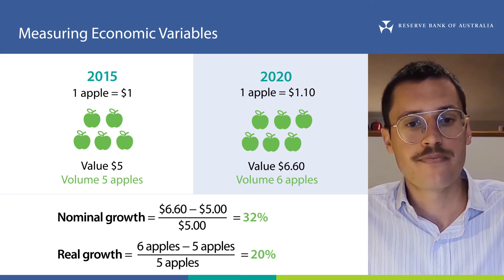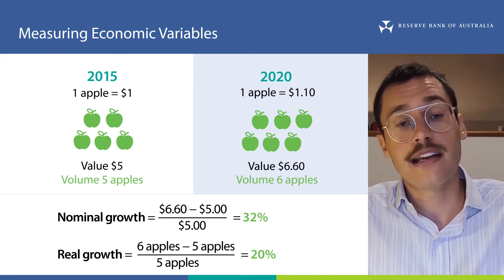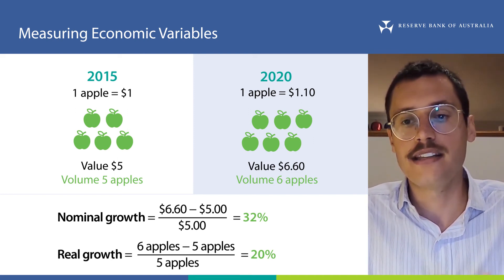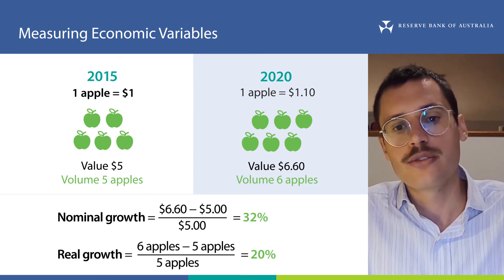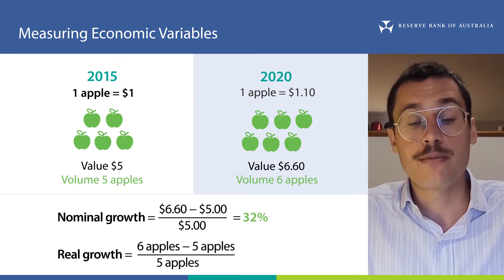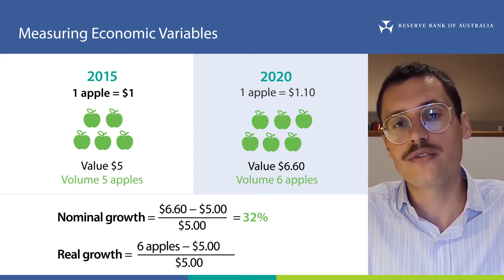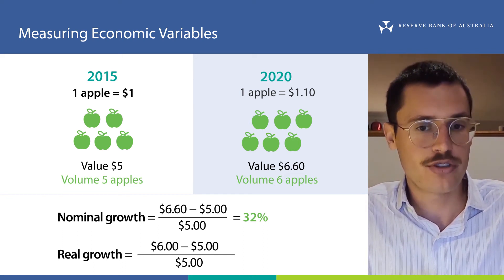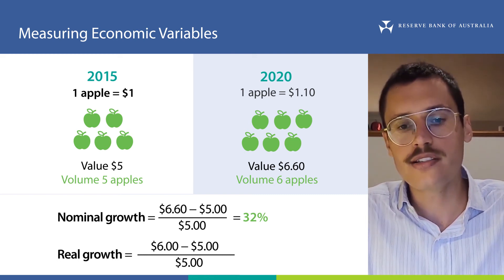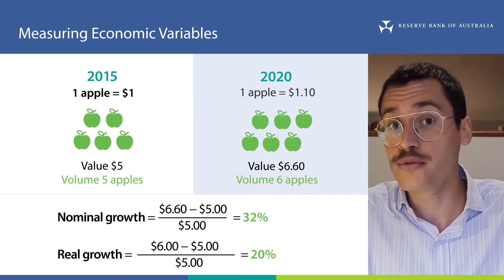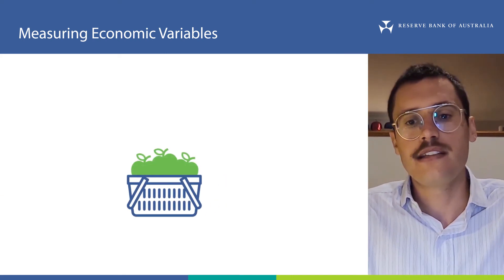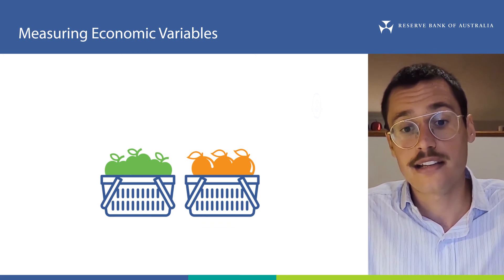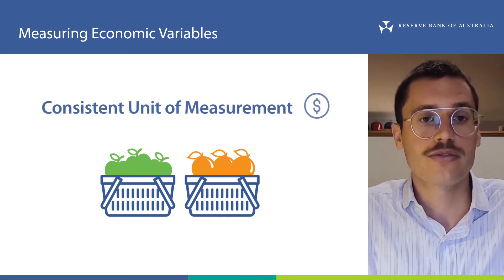If we go back to our previous example, when we're calculating real growth we would calculate the value of the apples in 2015 and 2020, but we would only use one price — in this instance the 2015 prices. So in volume terms the size of the economy in 2015 would be the same five dollars, but in 2020 the size of the economy is now six dollars — six apples times a dollar. This is because we are only allowing the volume of apples to change, not the price. Notice this gives us the same real growth as when we used apples as our unit of measurement. Now it would be easy to add oranges, bananas, and pineapples and calculate the economy's size because we have a consistent unit of measurement across all our goods.